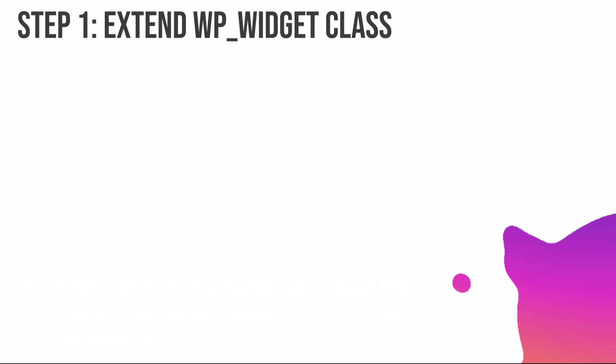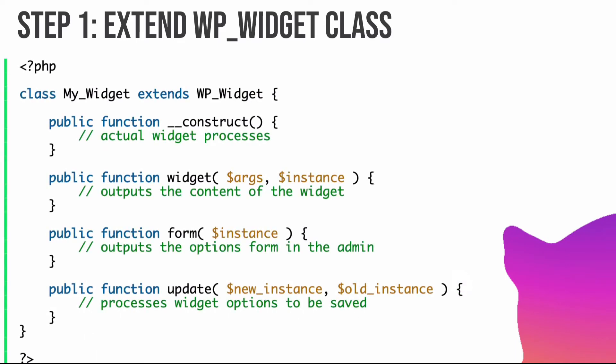The first step is extending the WP_Widget class. You create a class with your widget's name and extend WP_Widget. There are functions you can override: the constructor, where you put the actual widget setup; the widget() function, which takes arguments and an instance and outputs the widget content on the frontend; the form() function, which outputs the options form in the admin dashboard; and the update() function, which handles saving options to the database via the wp_options table.